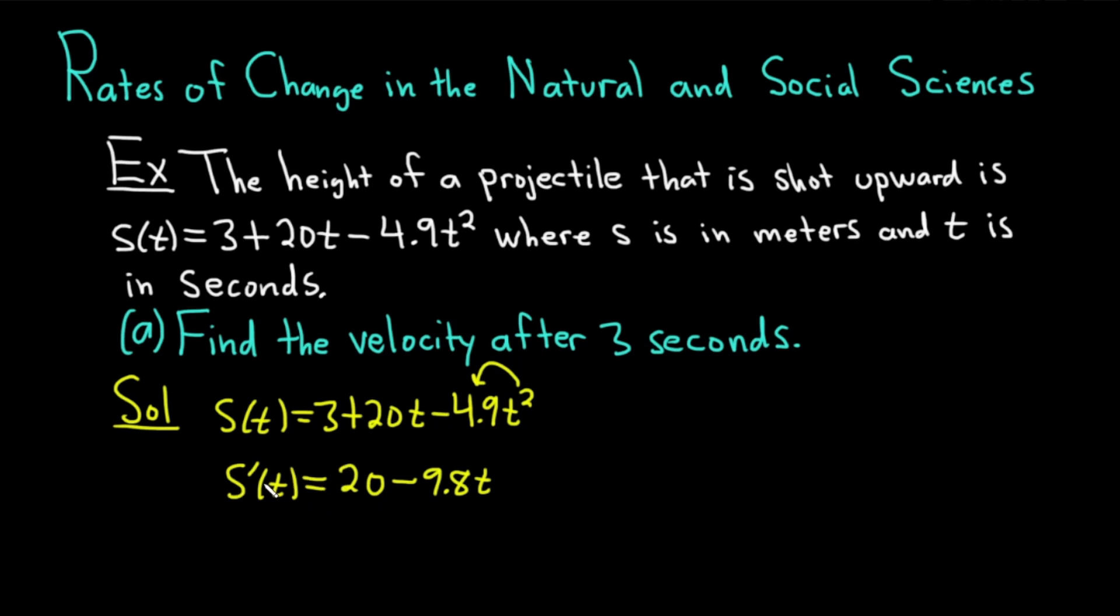So if we plug in a value of t, it will give us the velocity after t seconds. So we want it after 3 seconds. So s'(3) is equal to, we have 20 - 9.8. But instead of t now, we're using 3. So s'(3) is approximately equal to -9.4.